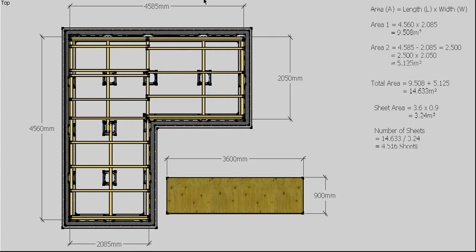Now there are some restrictions we're going to have — the sheets have to work with the joists. We can't have a sheet just going from one joist to the next; it actually has to span across at least two joists. So there are some restrictions and rules for when we lay it, and we have to allow for a little bit of waste. I'll allow 15% in this case. So my 4.516 × 1.15 gives me 15% waste, which comes to 5.193 sheets.